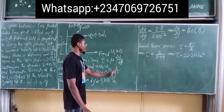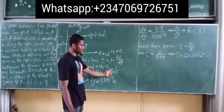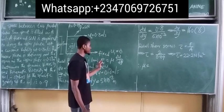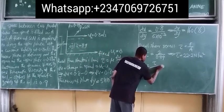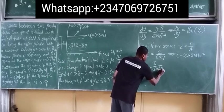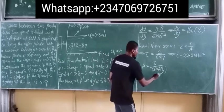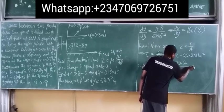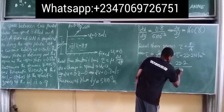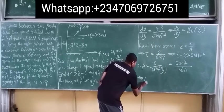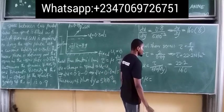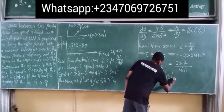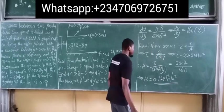Since we know tau and du/dy, we can make dynamic viscosity the subject. Mu equals tau divided by du/dy. This equals 22.2 divided by 160, which gives us 0.139 Newton-seconds per meter squared. This is the value of the dynamic viscosity.